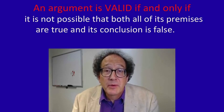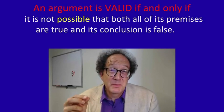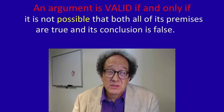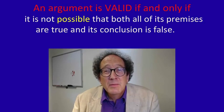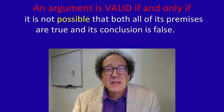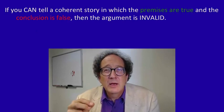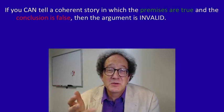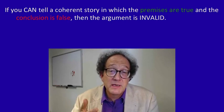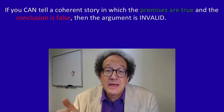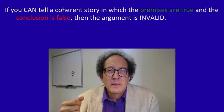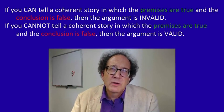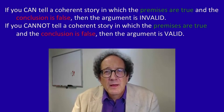That might strike you as a simple notion, but actually that little word 'possible' is a problem. How do you tell what's possible or not possible? There's no mechanical solution to that. But for now, let's think of it this way: is there any way for you to tell a coherent story where the premises are true and the conclusion is false? Can you describe a situation with that combination of truth values? If you can tell a coherent story, then it's possible and the argument's not valid. But if there's no way to tell such a coherent story, then the argument's valid.